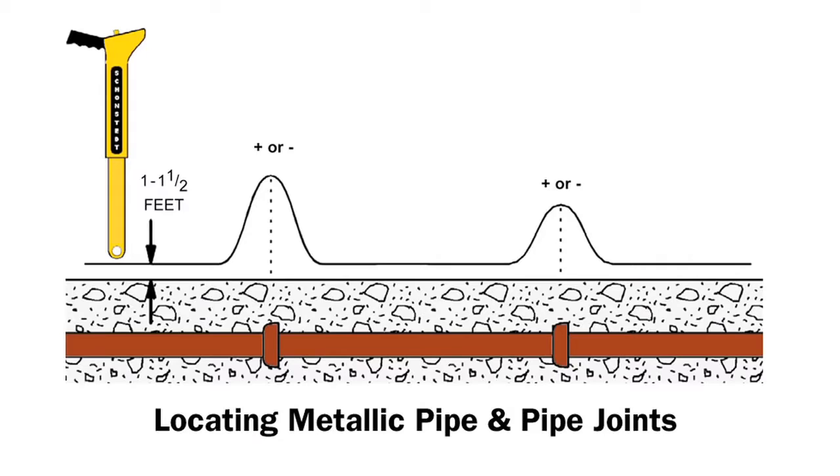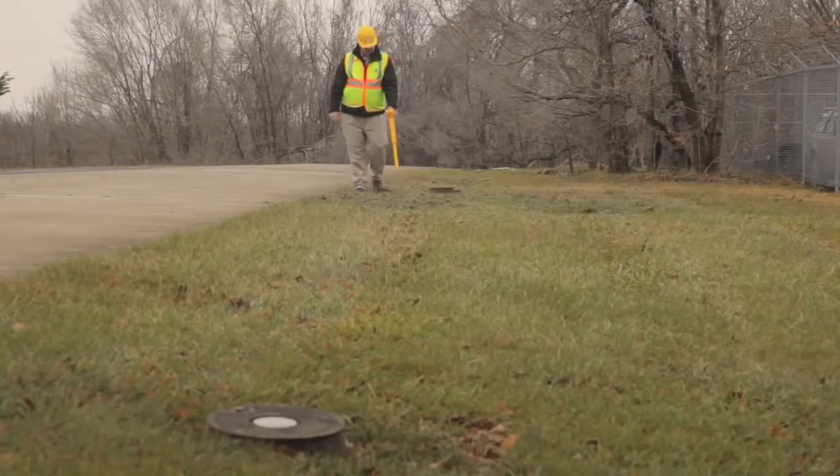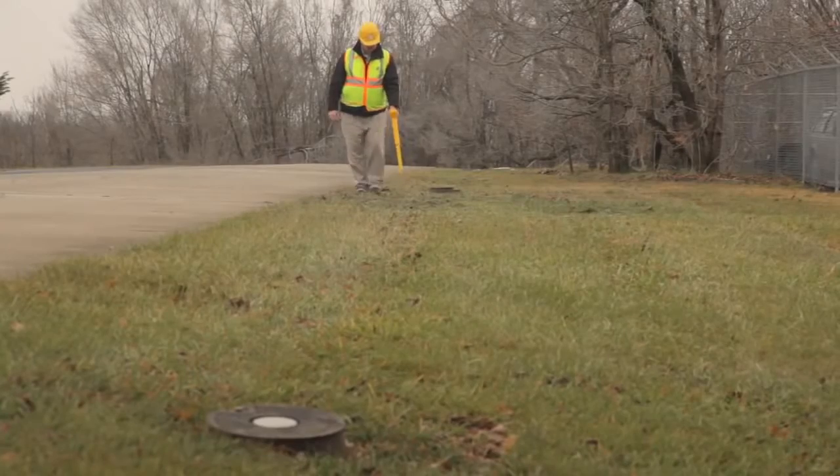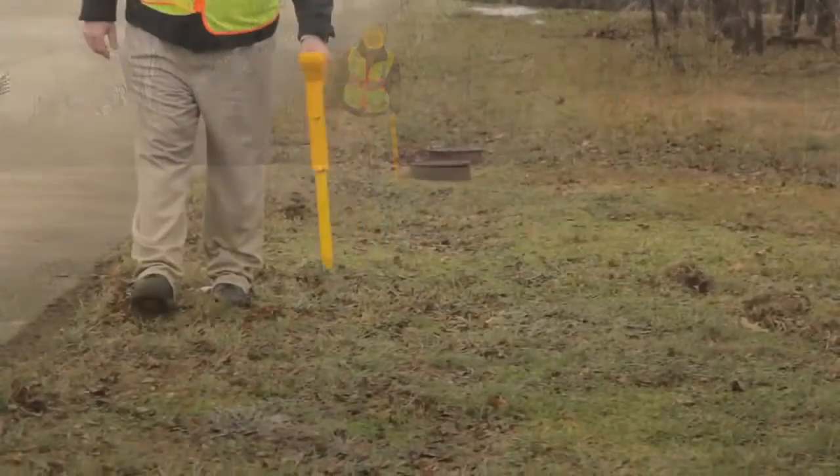This next application is to detect a joint or a transition phase between two steel pipeline sections as they come together. Because the pipes are made out of steel and therefore ferrous, there's going to be a magnetic field distortion at that point of the joint. I'm going to try to detect that now with a magnetic locator.